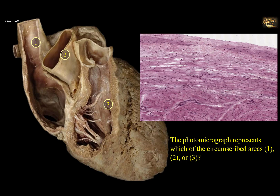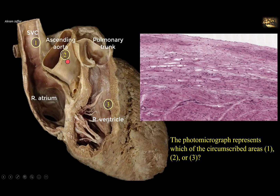The photomicrograph represents which of the circumscribed areas — 1, 2, or 3? The prosection of the heart shows the anterior aspect where the superior vena cava drains into the right atrium. The pulmonary trunk ascends from the right ventricle, which forms most of the anterior surface of the heart, so 3 is the wall of the right ventricle. 2 is the ascending aorta, which lies behind the pulmonary trunk. Now let's examine the photomicrograph and match it with either the vein in 1, elastic artery in 2, or cardiac wall in 3.